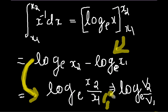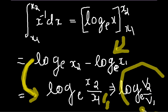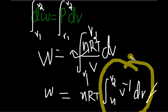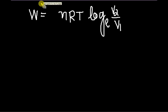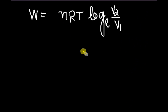So, it implies log to the base E of V2 by V1 in this case. I am going to substitute that value right here. We get W is equal to nRT log to the base E of V2 by V1.